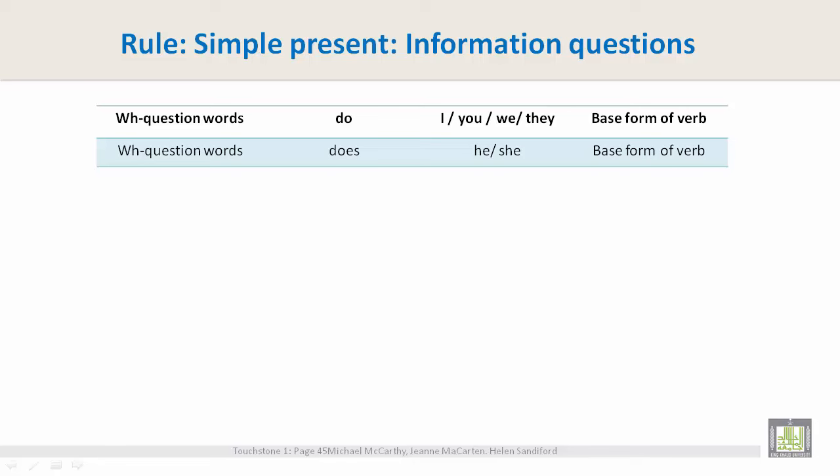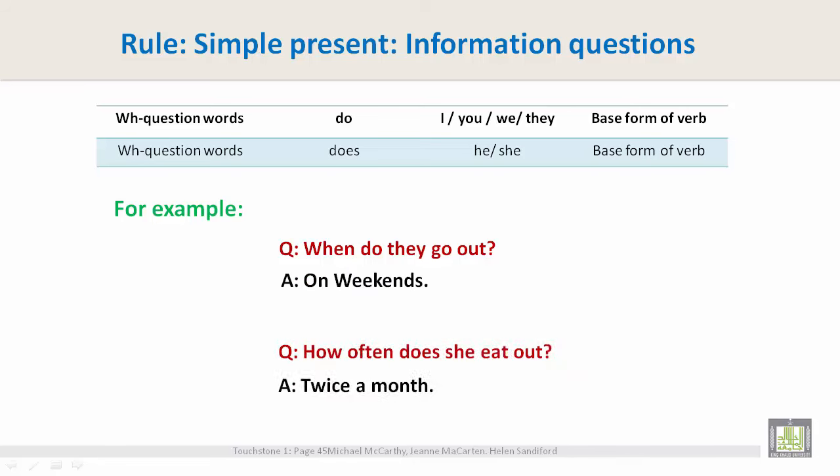WH Question words, does, he, she, the base form of the verb. Does he eat? Does she play? For example: When do they go out? On weekends. How often does she eat out? Twice a month.